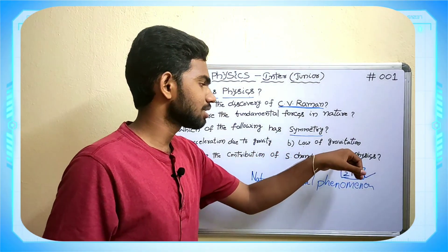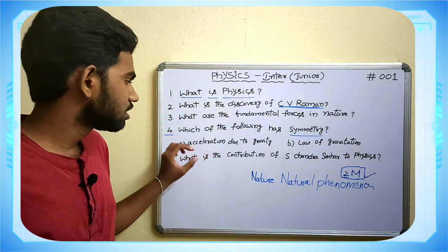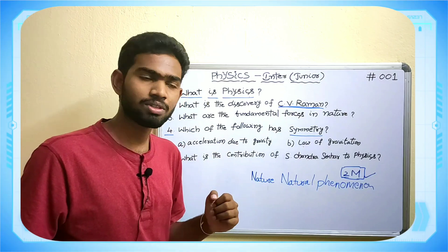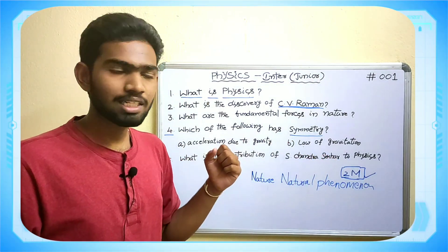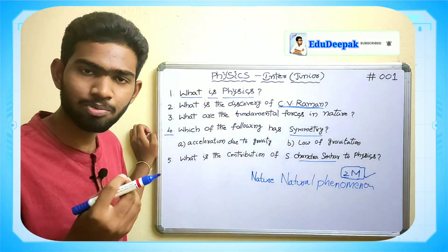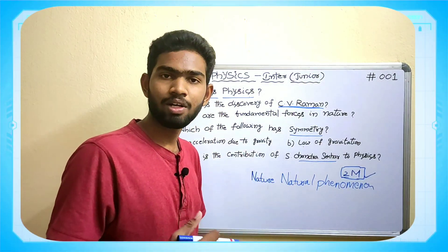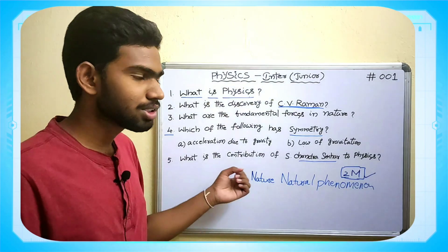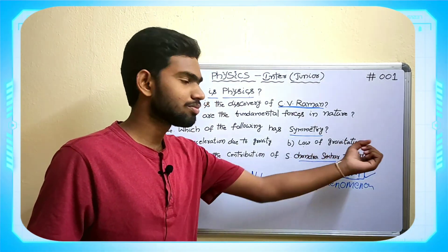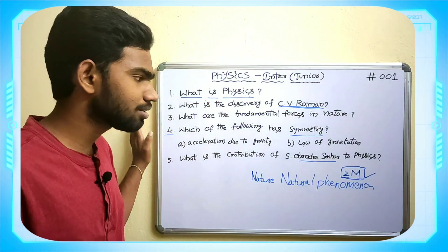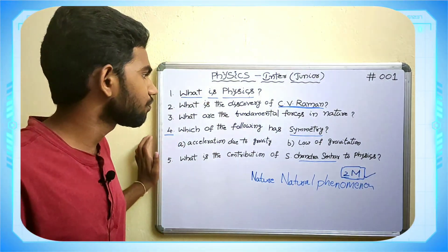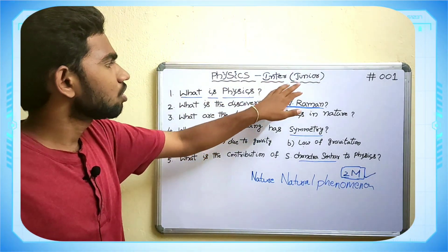The fifth question is: What is the contribution of S. Chandrasekhar to physics? The answer is the Chandrasekhar Limit and the structure and evolution of stars. So S. Chandrasekhar's contributions to physics are the Chandrasekhar Limit and the structure and evolution of stars. These are the five questions — damn sure, friends.